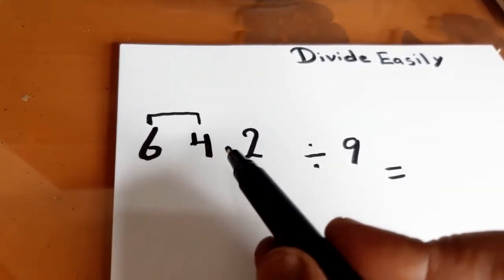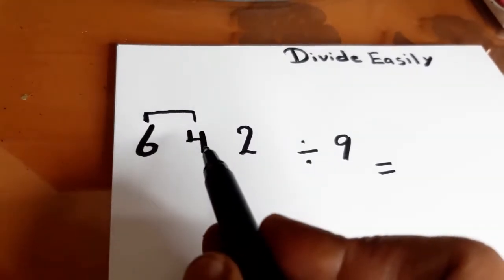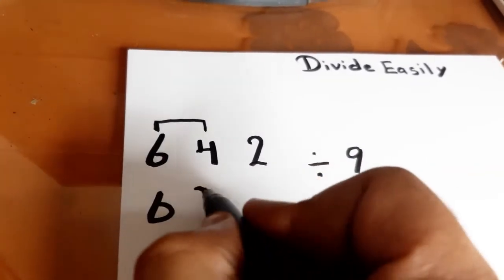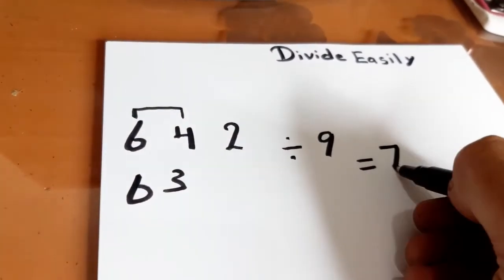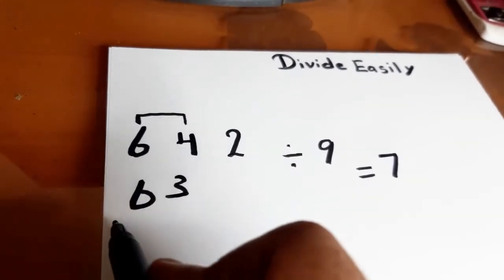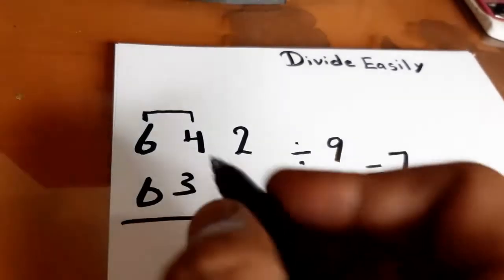64 is also indivisible by 9, so we will reduce 64 to 63. 63 divided by 9 equals 7. Then we will find the difference between 64 and 63. The difference is 1.